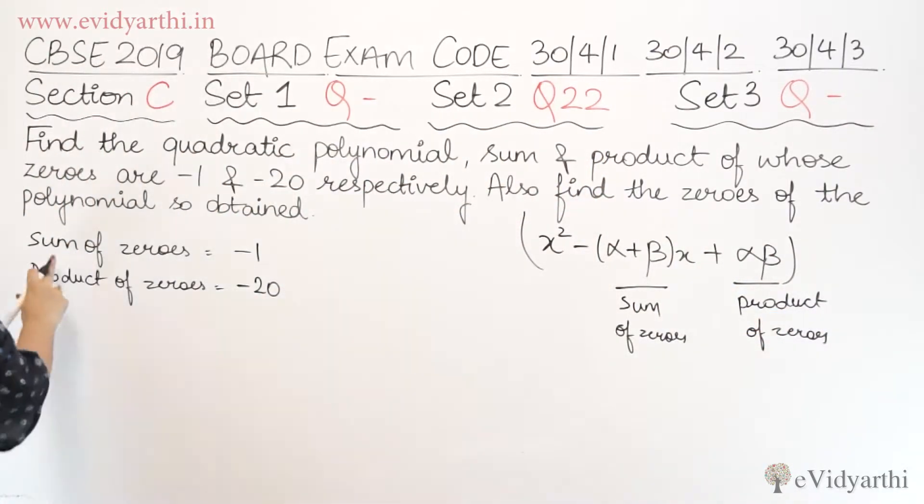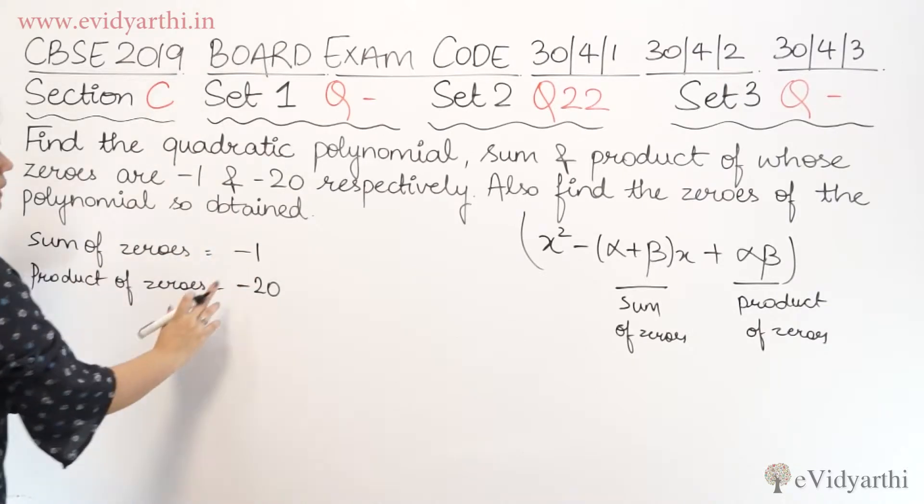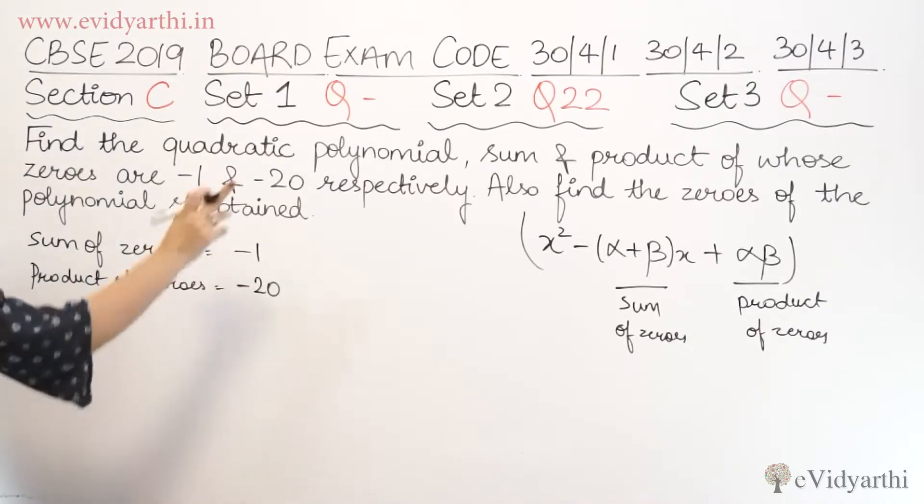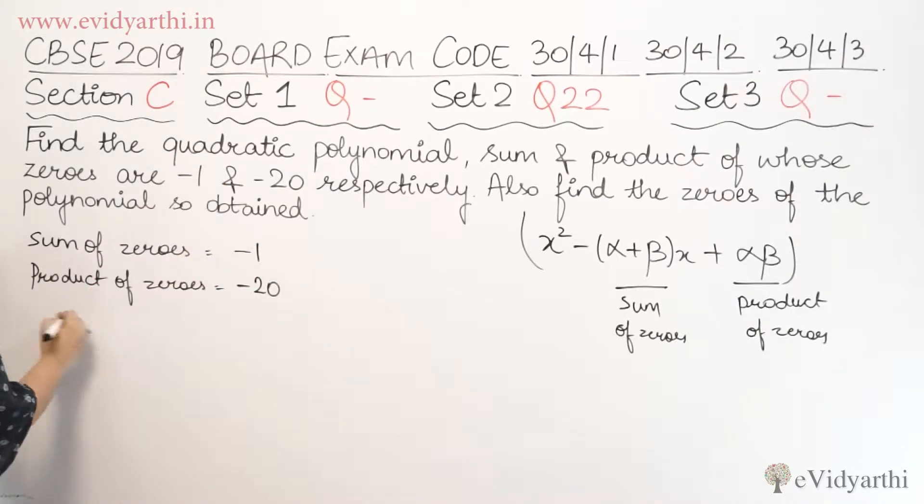So now, sum of zeros is given to us and product of zeros is given to us. You can see that. So we substitute these values into the formula.